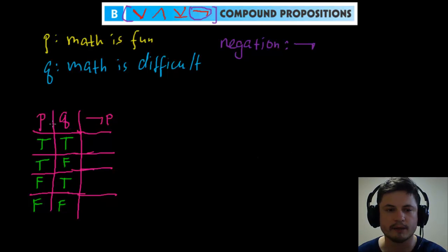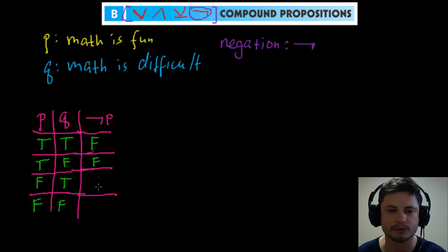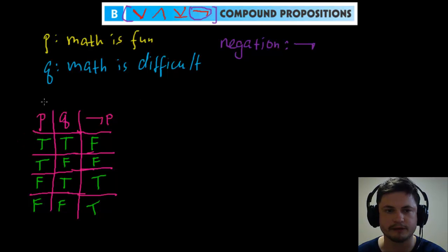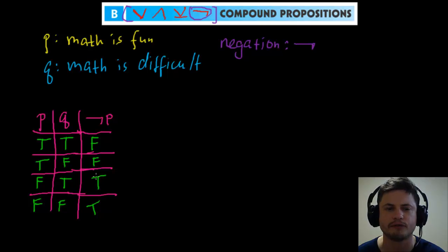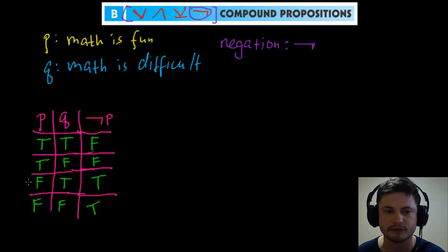For negation, we're only looking at the p column. If p is true, not p must be false — it's the opposite of p. So if p is true, not p is false; if p is false, not p is true. Essentially, negation means we are saying the opposite of the original proposition.